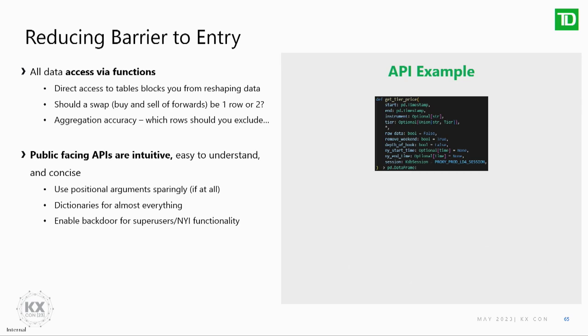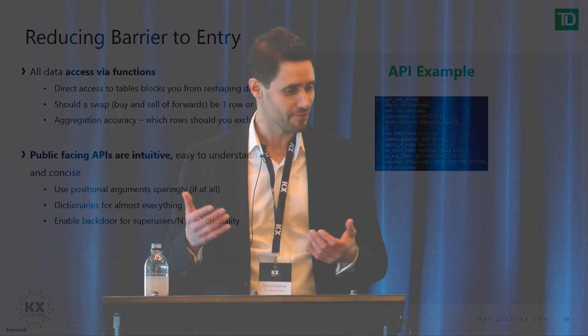One of the things I'd like to do is get my firm to use KDB more, and the main way we do this is by reducing the barrier to entry. First and foremost, I'm a very strong believer that all data is accessed via functions — I don't ever give anybody access to a table. The fundamental reason is that whenever you do that, it's very difficult to reshape your data later. A really good example: I've got a swap, which is buying something and selling something else — is that two rows in a database or one row? When you try to do simple things like count the number of trades or sum the volume, the aggregation isn't necessarily easy.